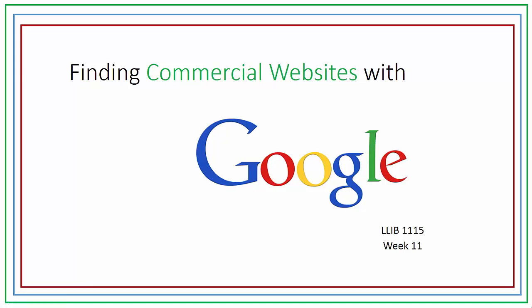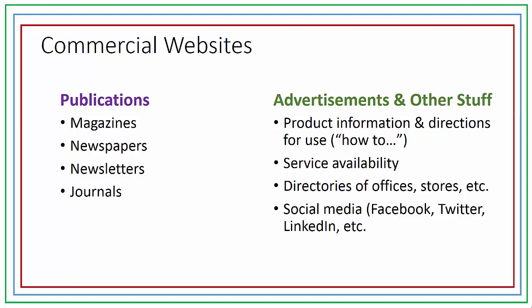Commercial entities are often looking for another venue to market their products and services, and the Internet has become a focal point of many businesses. Advertising and making products available via the Internet encompasses a vast number of websites, and locating credible sources with .com websites requires a careful eye. .com websites are for commercial entities, and there are many publications that make their articles available on the web, including magazines and newspapers for the general public, and journals and other professional literature.